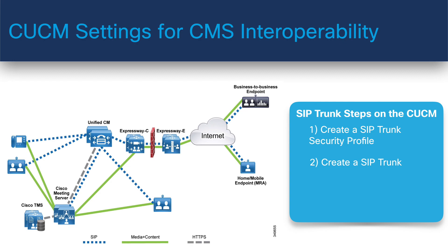The next step is to create a SIP trunk. When you configure the SIP trunk on the CCM, there are a lot of settings that could be configured which are unique to each company. However, there are some settings that must be configured for every SIP trunk to the CMS — including device name, device pool, SIP information, etc. We'll take a closer look at these when we go through the lab. The SIP trunk security profile and the SIP trunk only establish a connection between the CCM and the CMS, so for calls to actually be routed, there must be rules configured that determine which calls to route across this trunk.